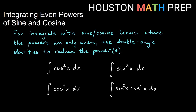Welcome back everyone, Houston Math Prep here doing a video on integrating even powers of sine and cosine. We've done a separate video already on the odd powers of sine and cosine, so if you need that, check that out. Here we're going to work four examples where the sine and cosine terms have only even powers in the integral. We will use double angle identities to reduce those powers, so you might want to brush up on your two double angle identities for sine and cosine.